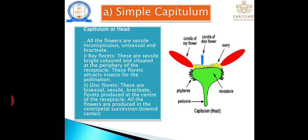Capitulum means a head-like structure. Flowers are sessile, inconspicuous, unisexual, and bracteate. Flowers are classified into two types: ray florets and disc florets. Disc florets have centripetal succession and are in the central region; they are bisexual and made for reproduction. Ray florets are in the peripheral region with bright coloring to attract insects for pollination; they are unisexual and serve only to attract insects.